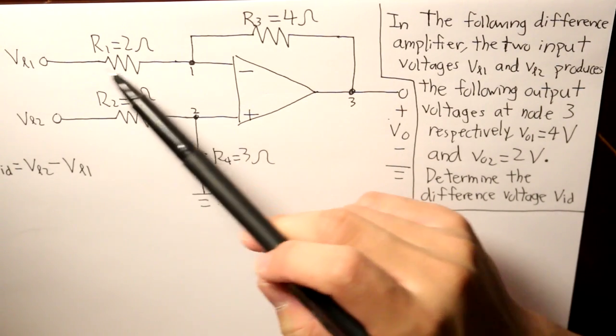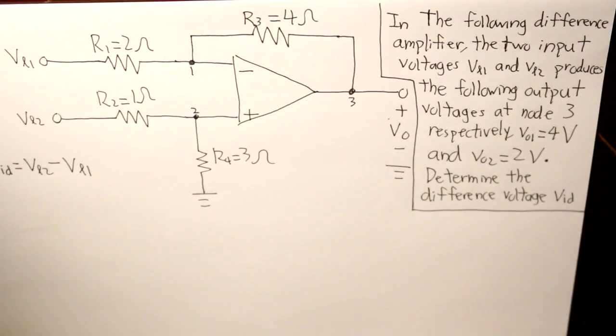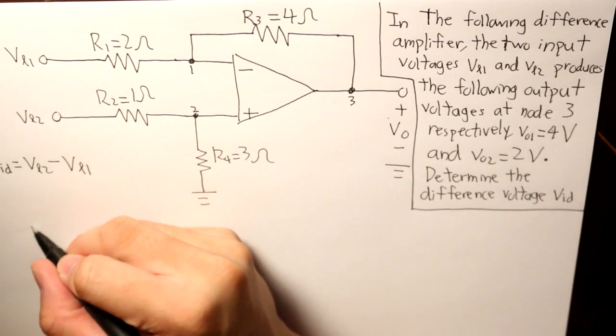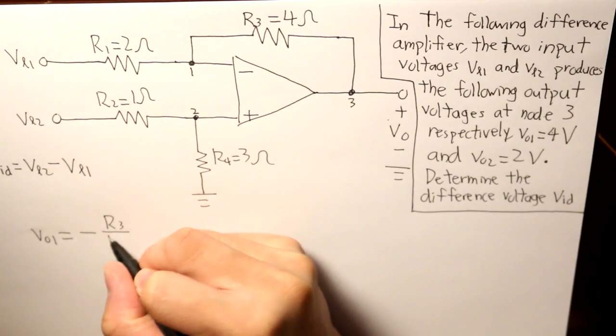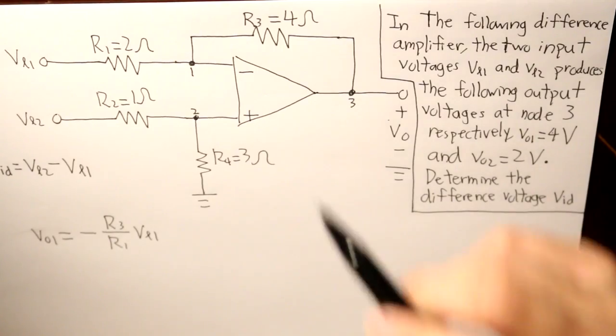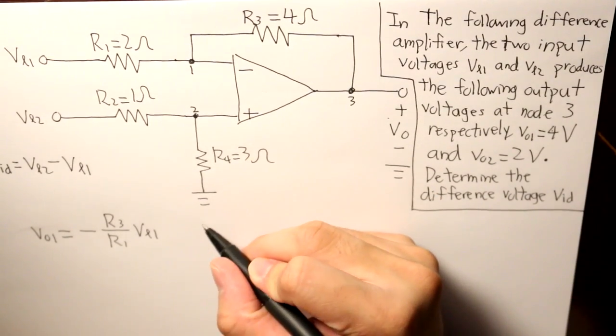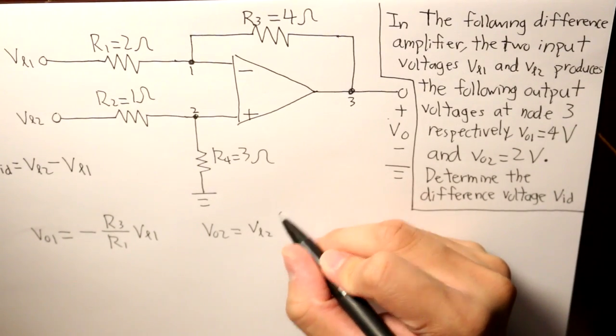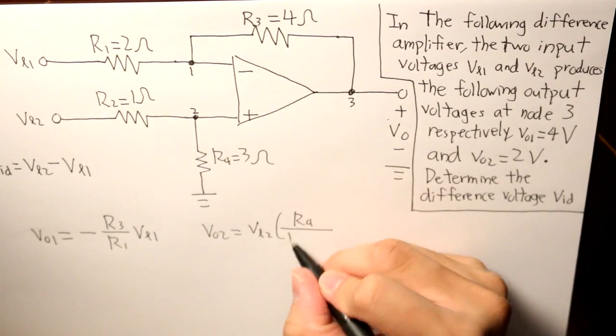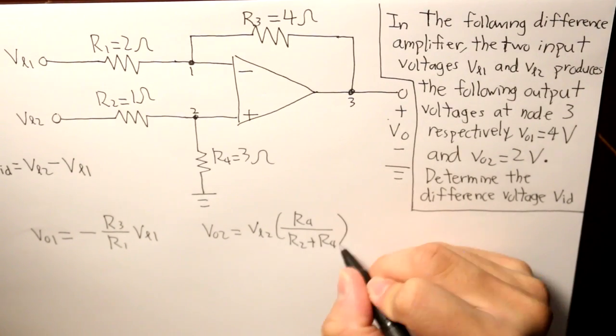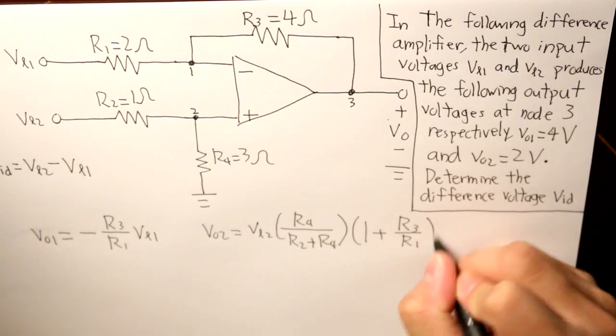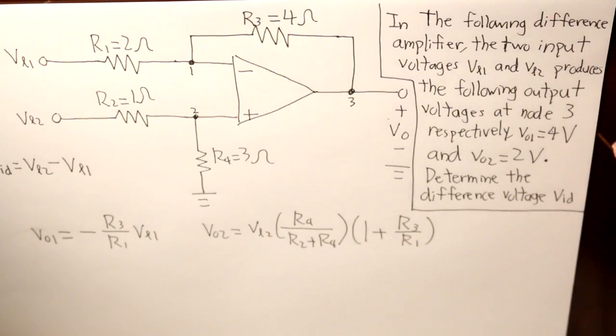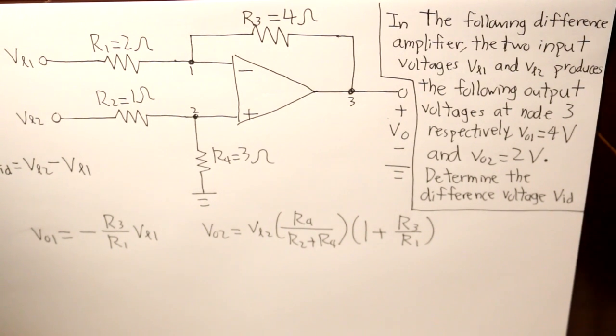And there's an equation to that, and that consists of the resistors that are connected around the op amp. So V01 is equal to negative R3 over R1 times VL1. And V02 is equal to VL2 times R4 over R2 plus R4, multiplied by 1 plus R3 over R1. So these are the two equations. And you can look them up again in my previous video where I have identified that more clearly.